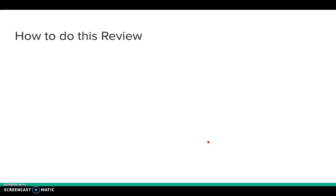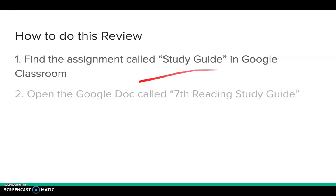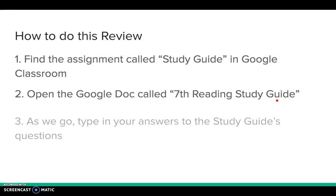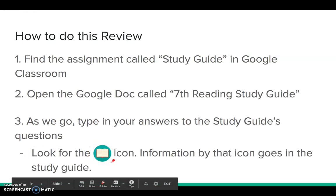A reminder of how to do this review: make sure you find the assignment called study guide in Google Classroom. Open up the Google Doc called seventh reading study guide and type in your answers as we go. Keep your eyes open for the book icon — information next to that icon is what goes in the study guide.